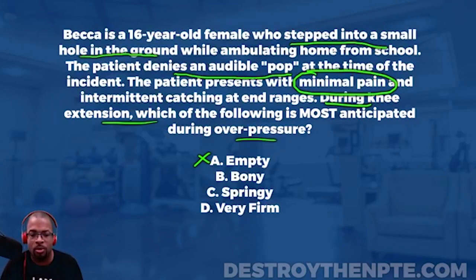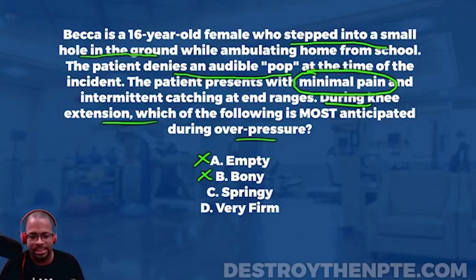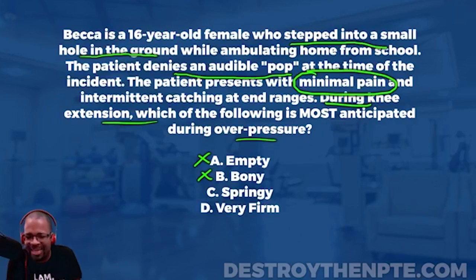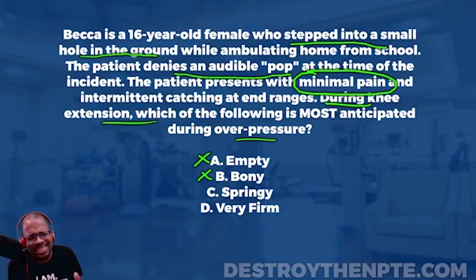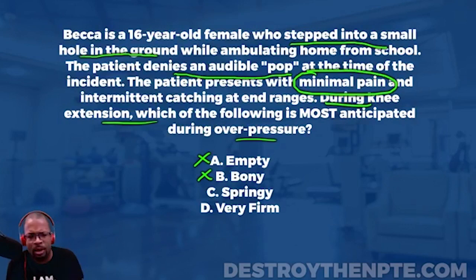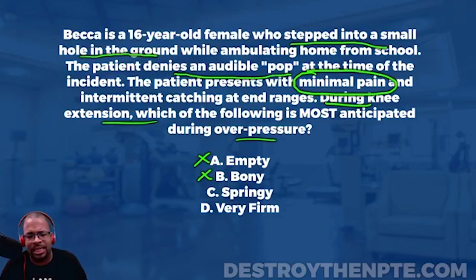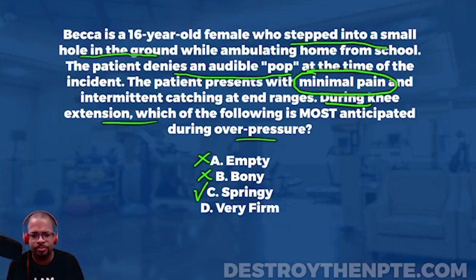Option C is springy end feel — it's like a rebound that you feel. If you've ever examined someone with a meniscal tear or labral tear, you get this rebound-like feeling. That's why it's sometimes called a springy block. It occurs when there's something loose inside the joint — a meniscal tear, labral tear, or a loose piece of cartilage — that creates this rebound effect at end range or with overpressure. A springy end feel fits this clinical picture. I'm putting a check mark next to C.